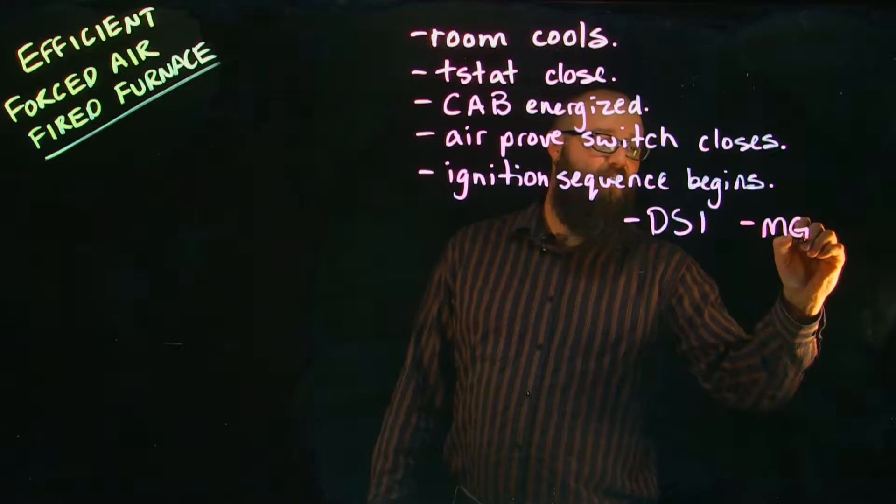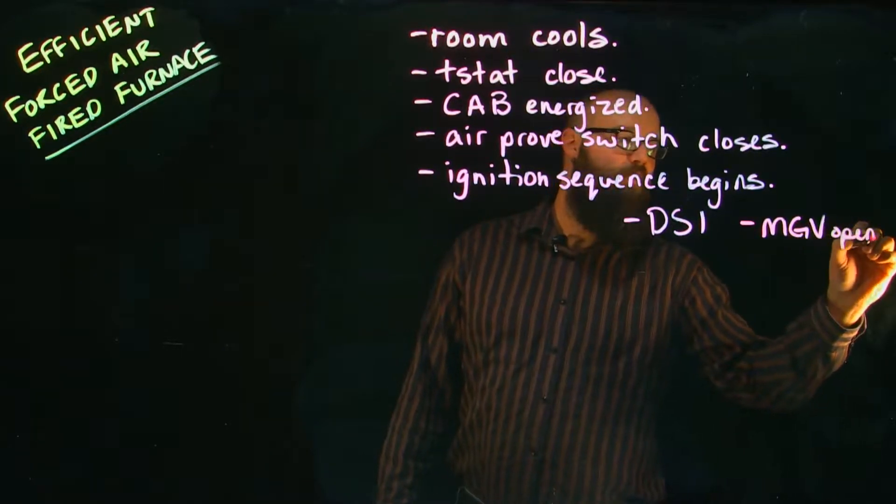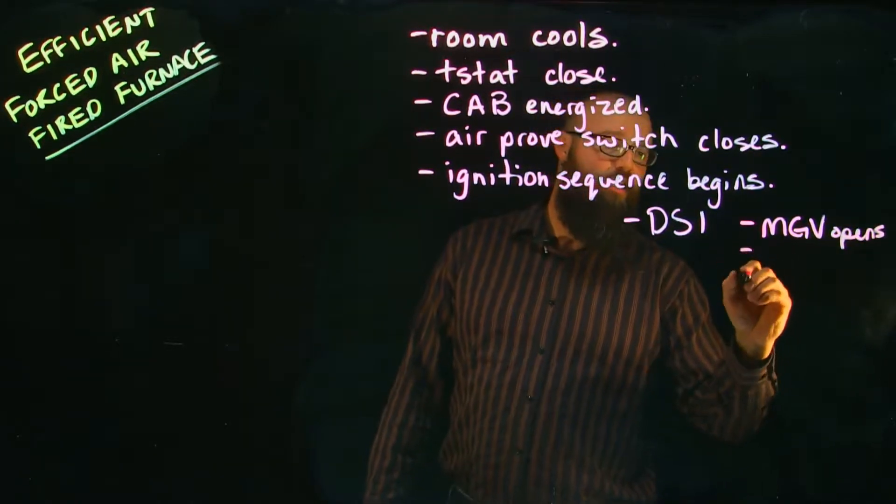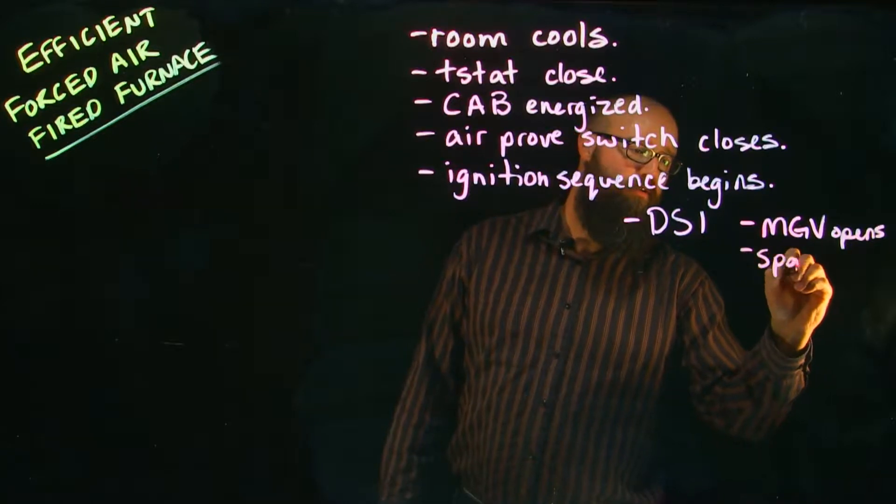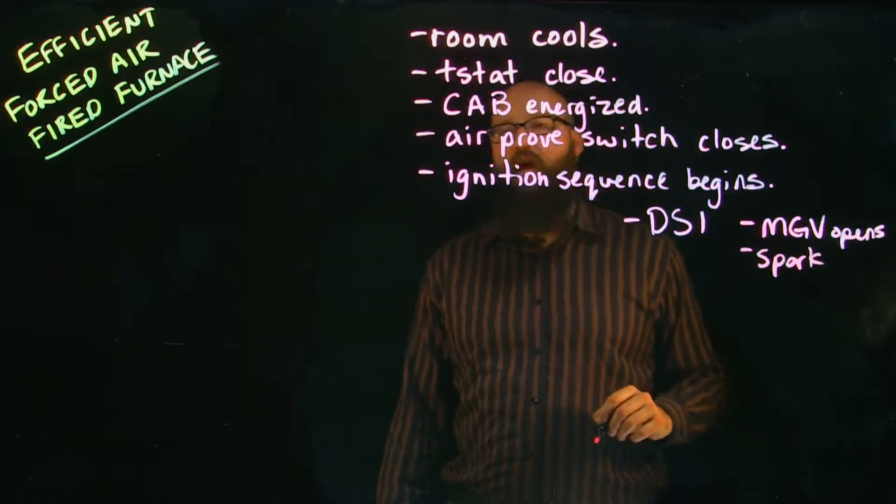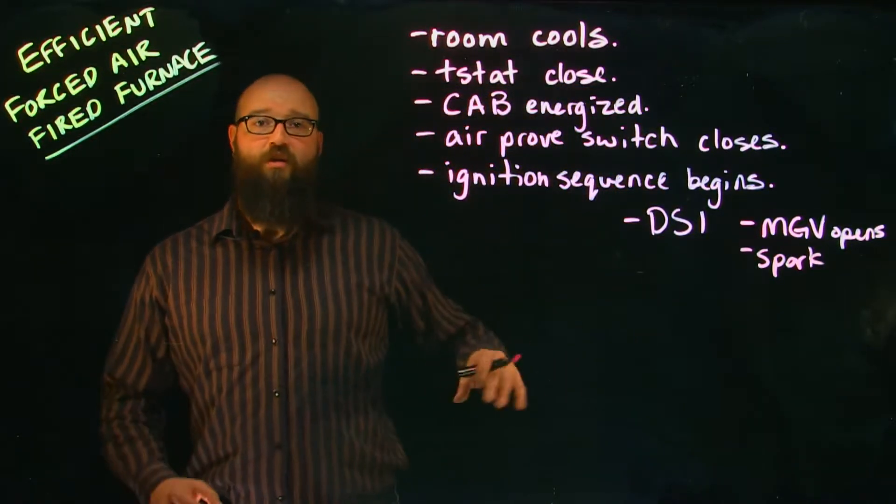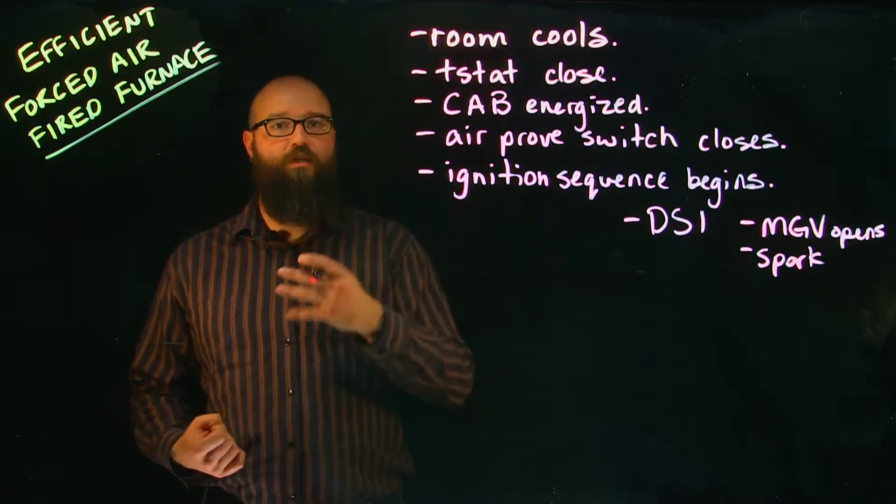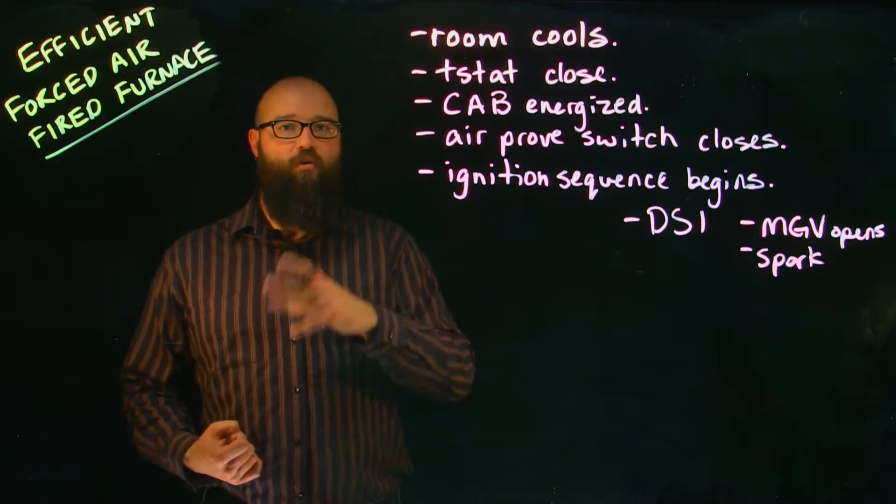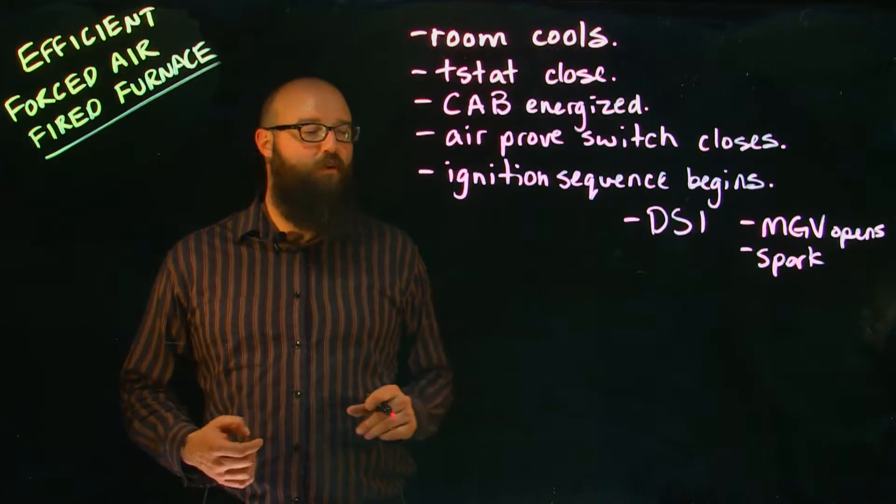Our main gas valve opens because it's energized, and our spark happens at the same time. So that as that gas is released, it's being exposed to the spark from our direct spark across those two points of contact.